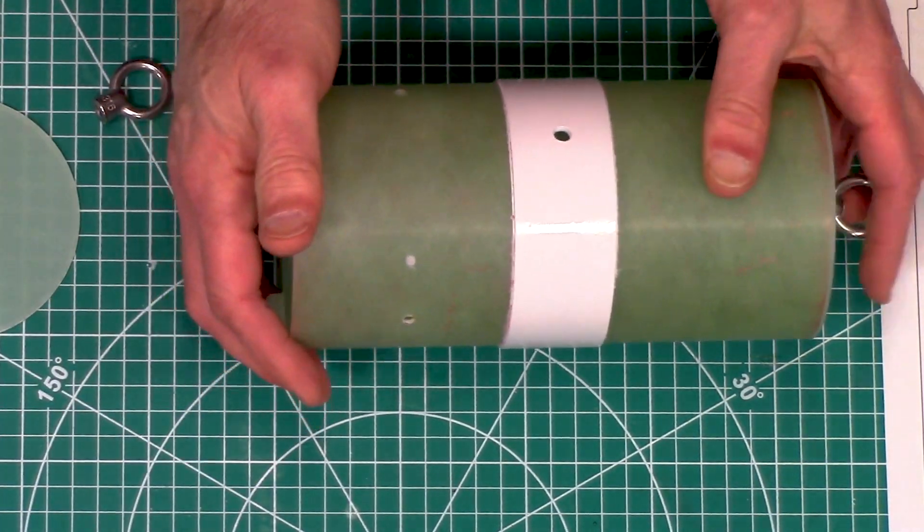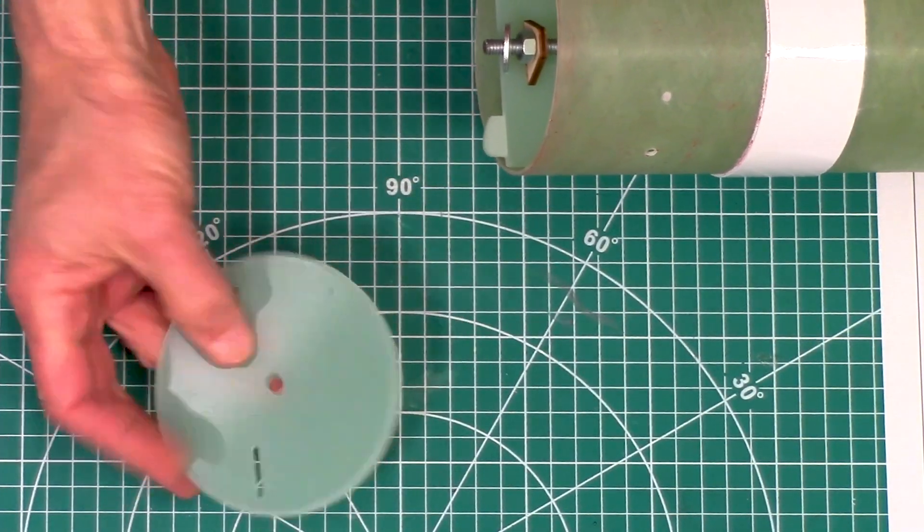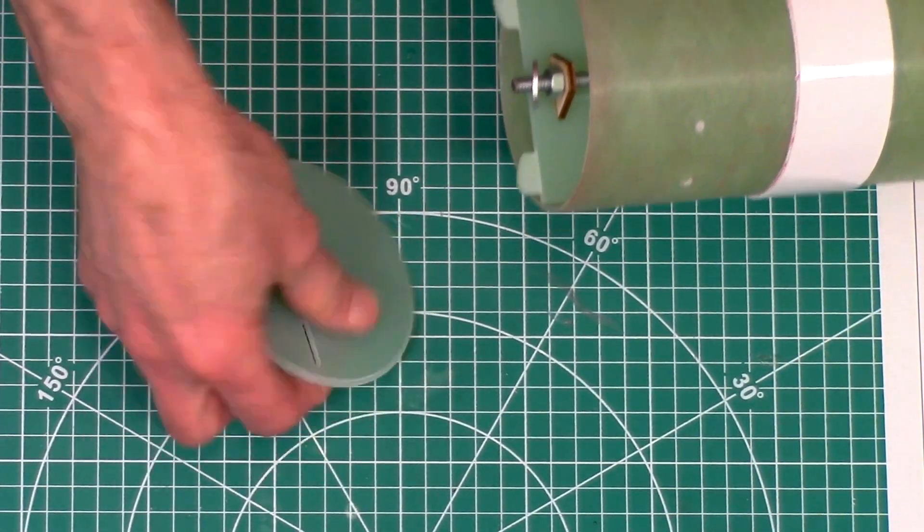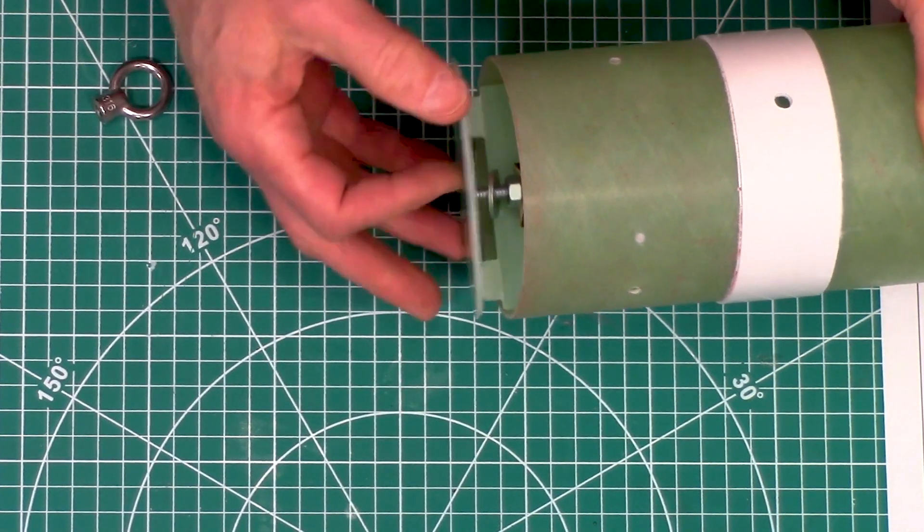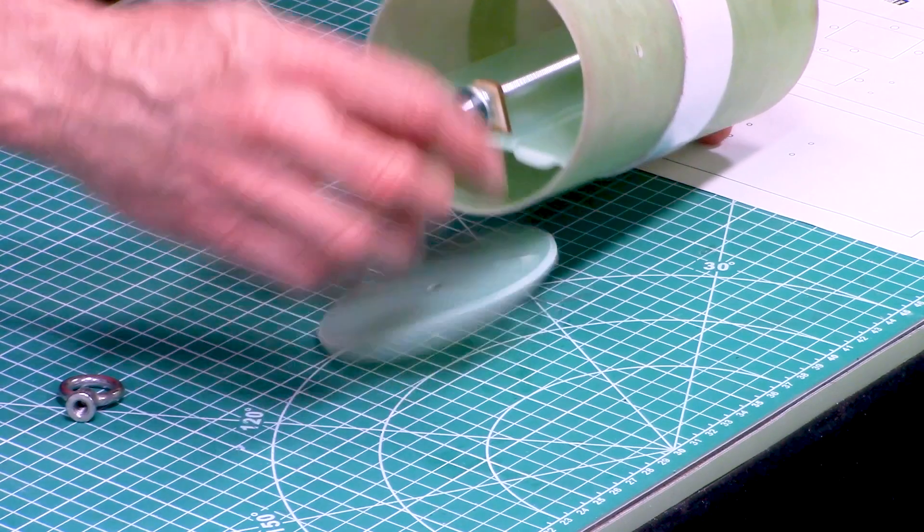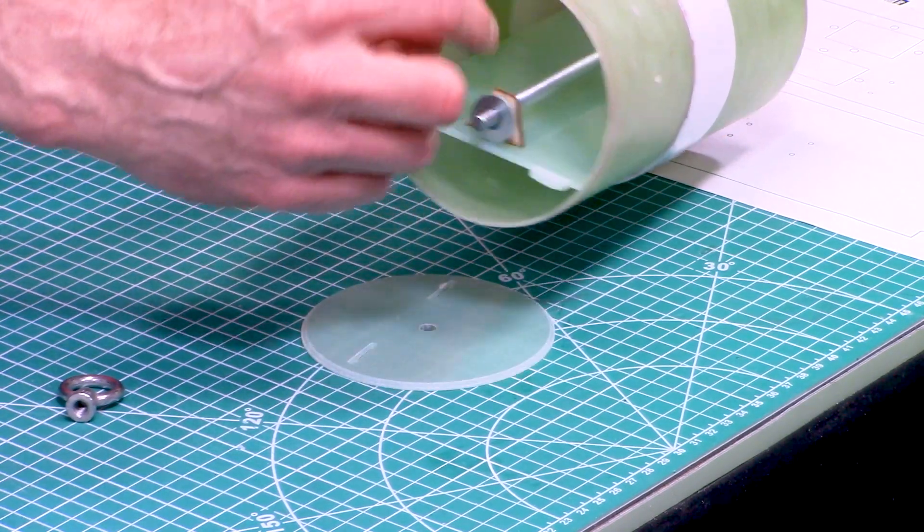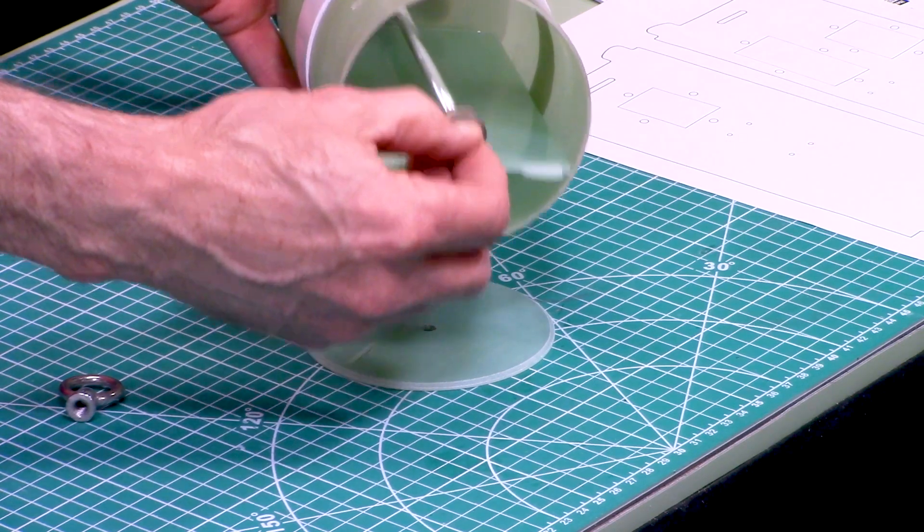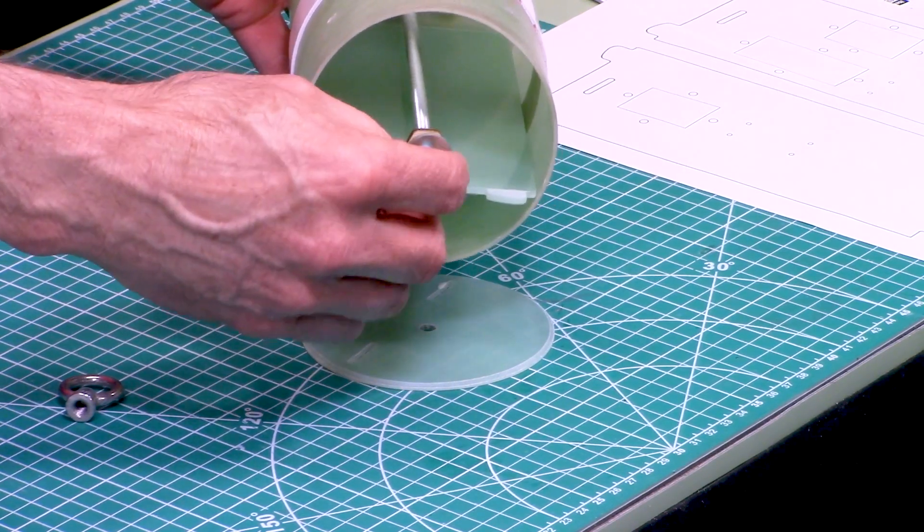Remember these holes that we drilled into the coupler—those go forward. On the bulkheads there's a little lip on the very edge right there that will be captured on the inside edge of the coupler.